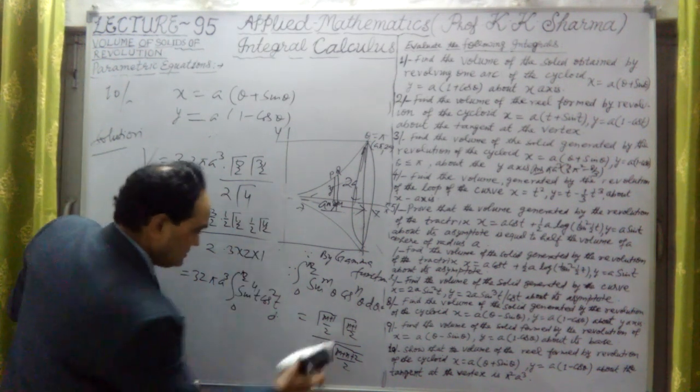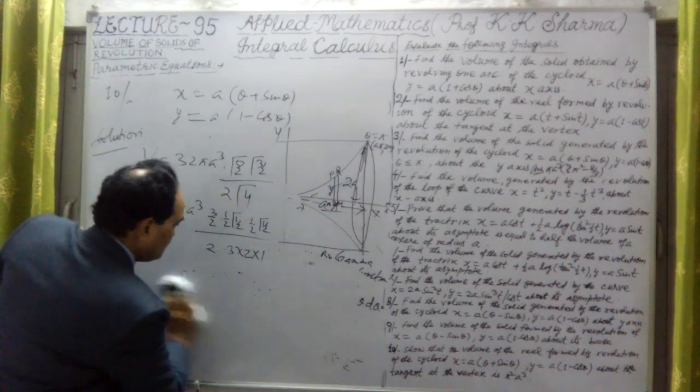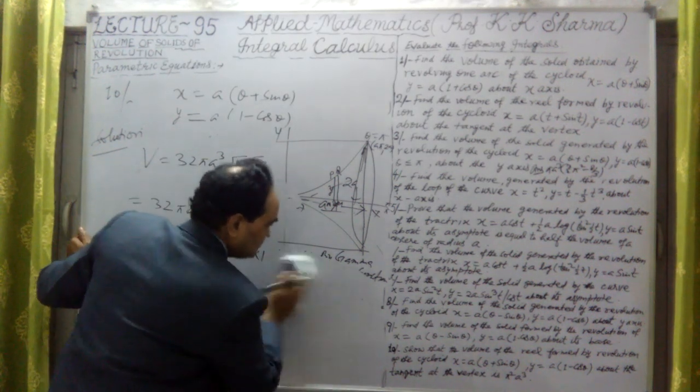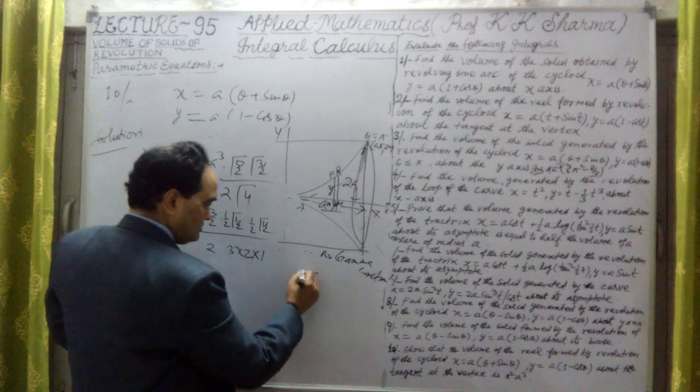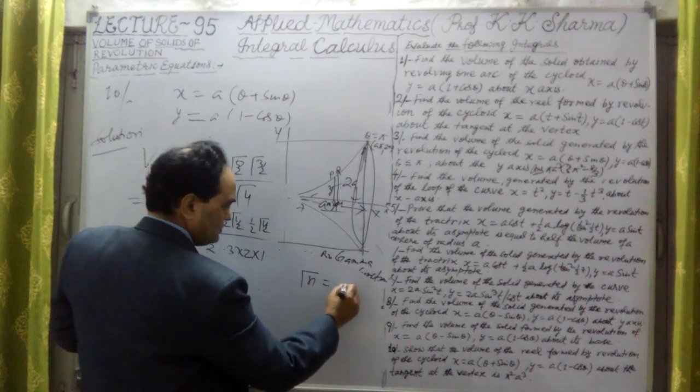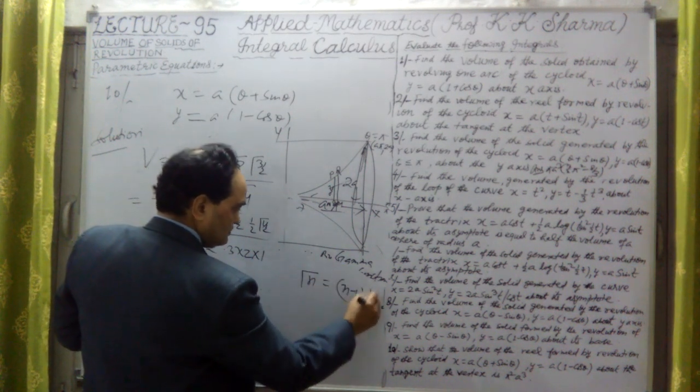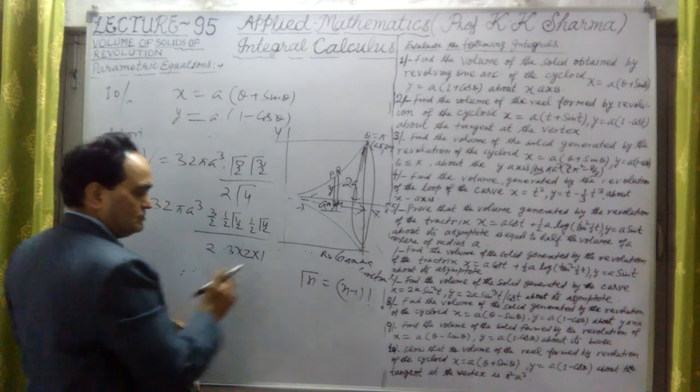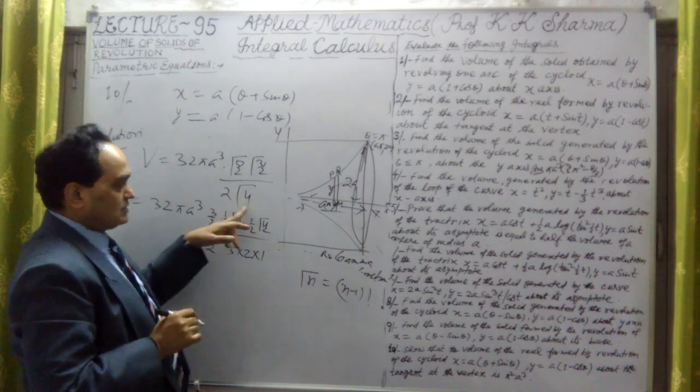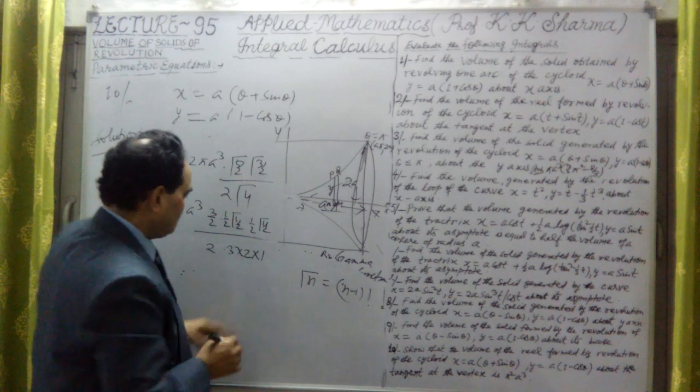Since I have already clarified that gamma n is factorial n minus 1, one lesser than whatever the number is given. So here gamma 4 is factorial 3, this is 3.